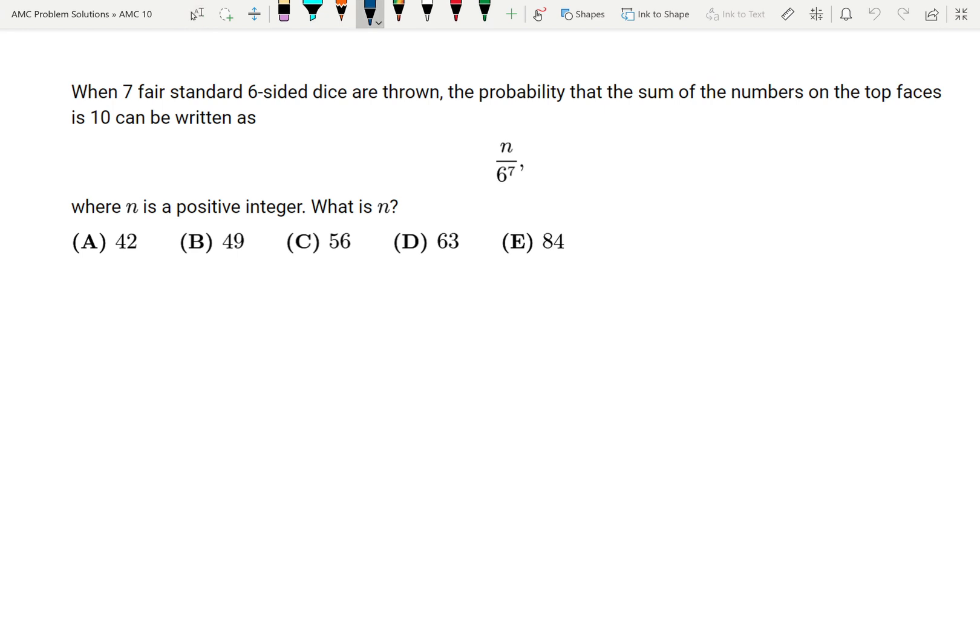I just need to find out all the cases where the sum is going to be 10. The first case is going to be if one of my rolls is a 4 and I roll 1s for all the others. So 4, 1, 1, 1, 1, 1, 1.